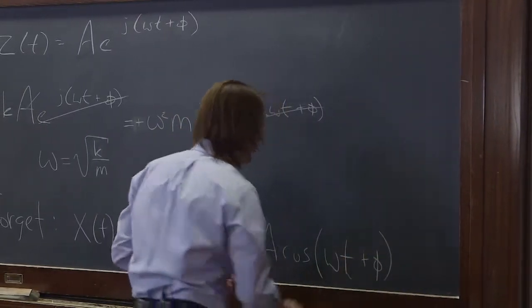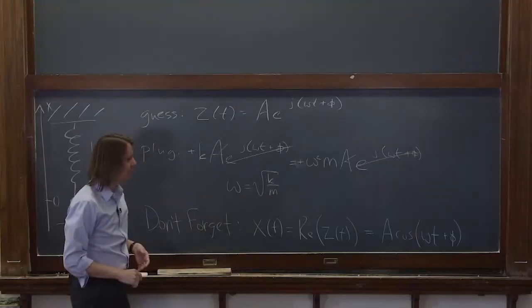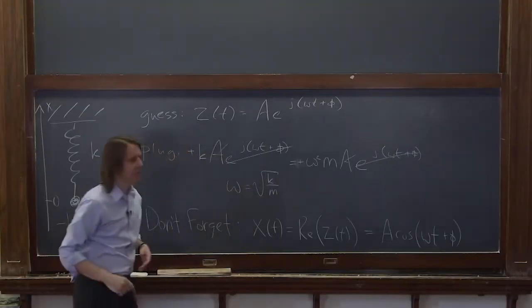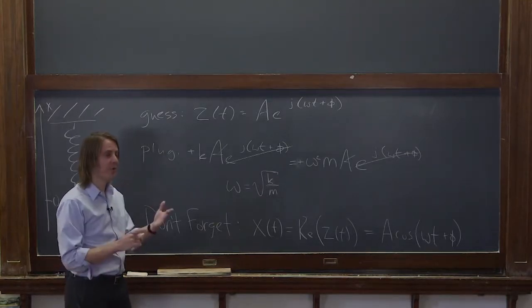which is now literally exactly the same as our guess of cosine, where omega has to be the square root of k over m. So it does work. We can use this.